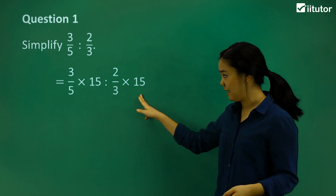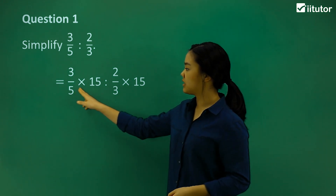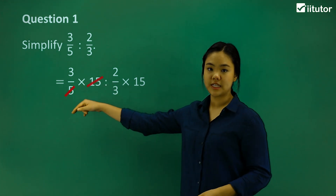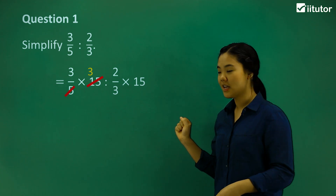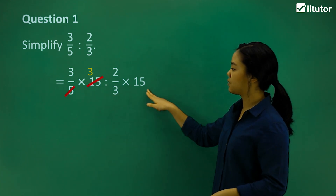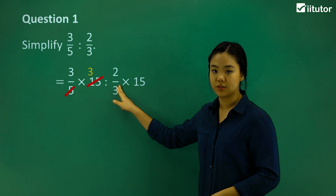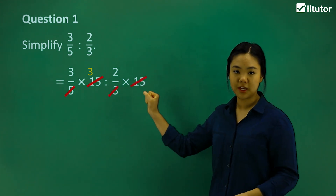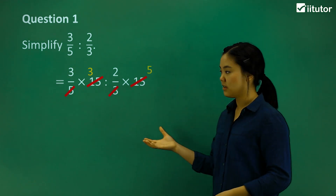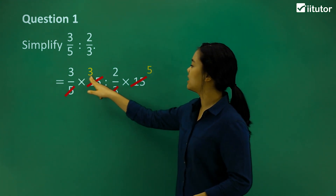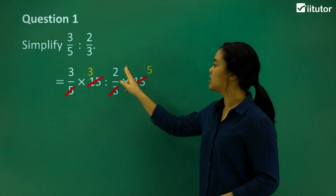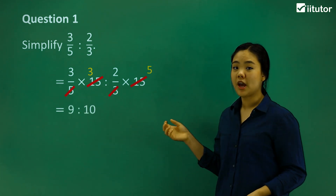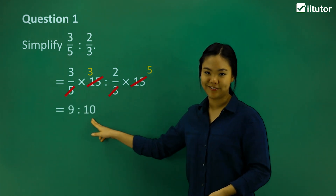Now it's just cancelling them out. We can cancel out 5 — how many fives in 15? That's 3. So we cancel on this side as well, top and bottom. 3 divided by 3 is 1, 15 divided by 3 is 5. So then we have 3 times 3 to 2 times 5, and the simplified ratio is 9 to 10.